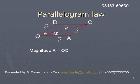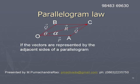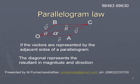The length OC represents the magnitude of the resultant R-bar, and the angle made by OC with OA, that is alpha, gives the direction of the resultant. When two vectors are taken, the magnitude and direction of their resultant will be obtained by representing them as the adjacent sides of a parallelogram, and the resultant will be represented by the diagonal both in magnitude and direction. This is how we understand parallelogram law.